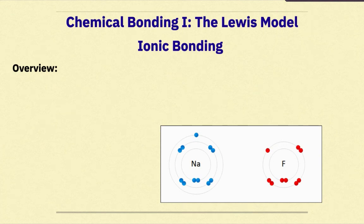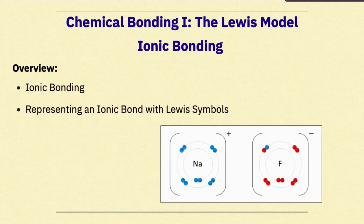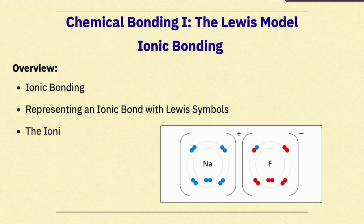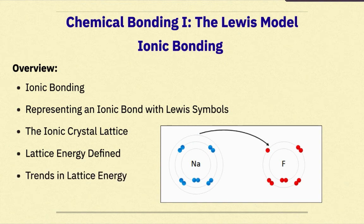Chemical Bonding 1, the Lewis Model. In this tutorial, we will focus on ionic bonding, representing an ionic bond with Lewis symbols, the ionic crystal lattice, lattice energy defined, and trends in lattice energy.